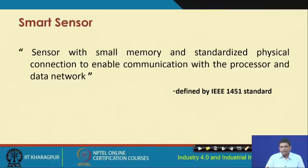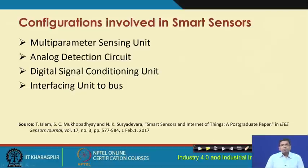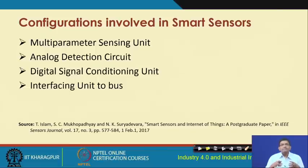Smart sensors are the ones which have some small memory and a standardized physical connection to enable communication with the processor and data network - this is as per the IEEE 1451 standard. The configurations involved in smart sensors include a multi-parameter sensing unit, meaning multiple parameters can be measured through the same sensor - for example, the same sensor can be used to measure multiple gases. The same sensor would be able to do multiple functionalities.